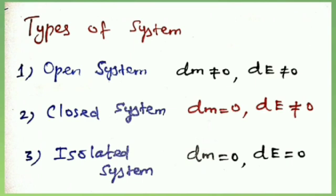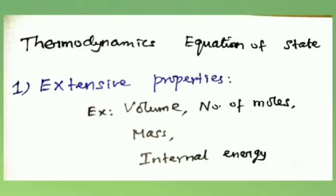Next topic: thermodynamic equation of state. Some properties of a system depend on its mass or size, whereas other properties do not depend upon mass and size. Based on this, properties of a system are grouped as extensive property and intensive property. Extensive properties depend on mass and size, for example: volume, number of moles, mass, internal energy u, etc.